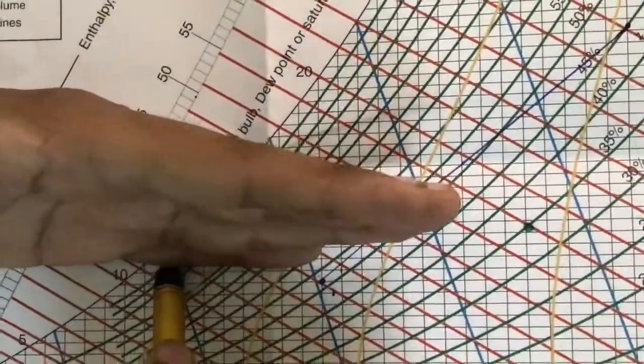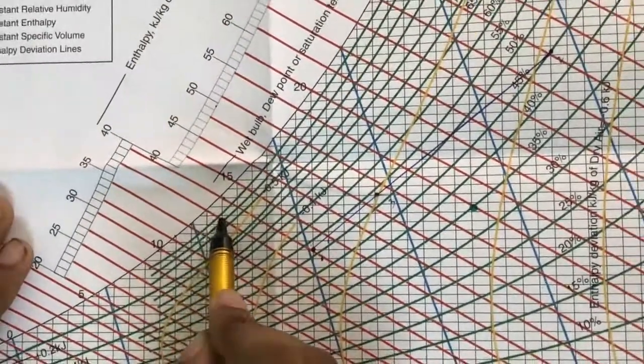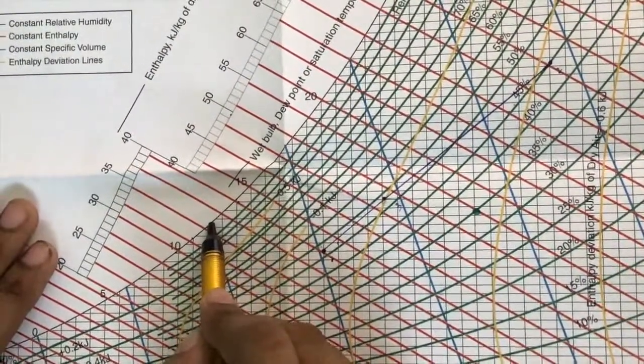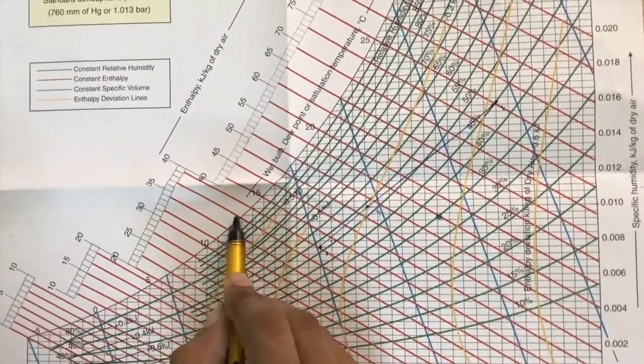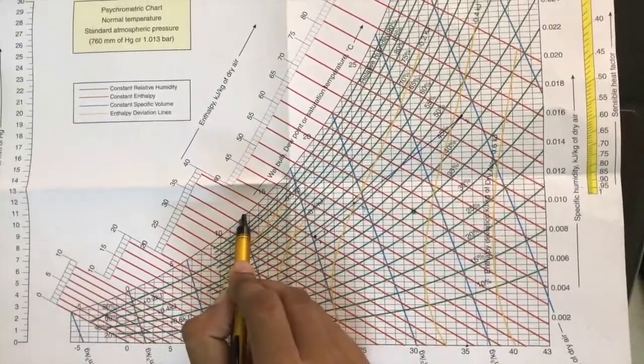If you are drawing the horizontal we will get the dew point temperature. So let us take it is about 12 or 13 or 12.5. So now we have obtained the dew point temperature.